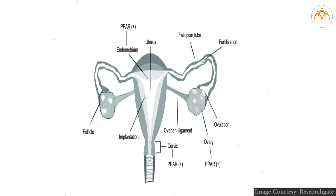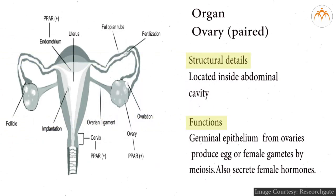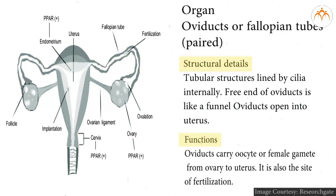Human female reproductive system — organ, structural details, and functions. Ovary (paired), located inside the abdominal cavity. The germinal epithelium from the ovaries produces eggs or female gametes by meiosis, and also secretes female hormones. Oviducts or fallopian tubes (paired) are tubular structures lined by cilia internally. The free end of the oviduct is like a funnel, and the oviducts open into the uterus. Oviducts carry the oocyte or female gamete from the ovary to the uterus, and are also the site for fertilization.